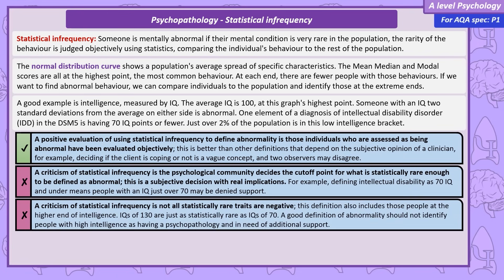Also, not all statistically infrequent traits are negative. For example, this definition includes those people with low intelligence, but also people at the higher end of intelligence. This is just as statistically rare, but of course we wouldn't want to define someone with high intelligence as having a psychopathology and in need of additional support.